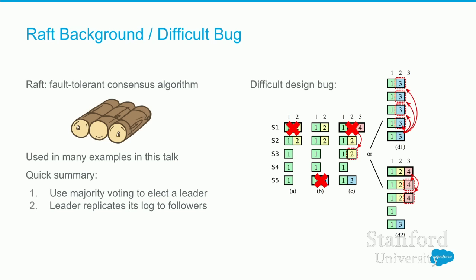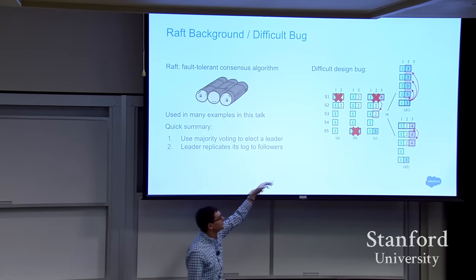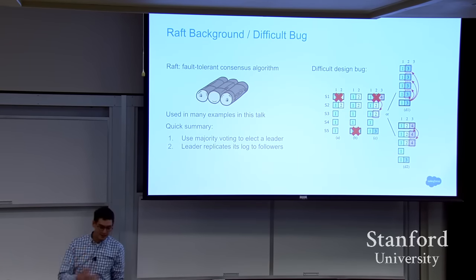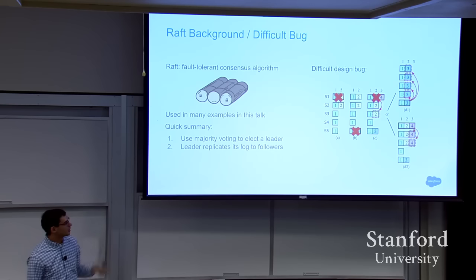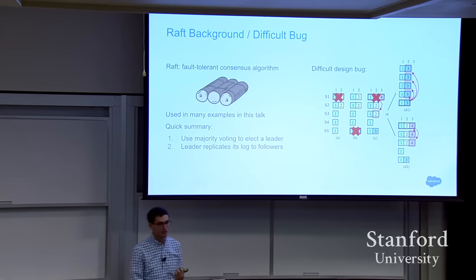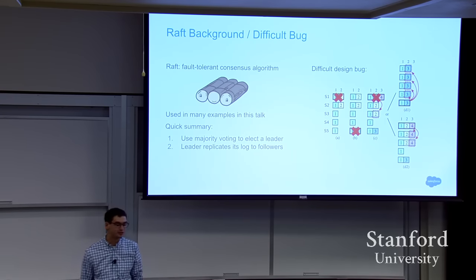Raft is a big enough system to have very complicated bugs. Here's one that David Mazzier found — the top server's leader crashes, the bottom server becomes leader and crashes, the top server becomes leader again, replicates things out a little bit more, crashes. Then the bottom server becomes leader again. It took all of that to show the bug. You really can't think one failure deep — you have to think about the entire state space.